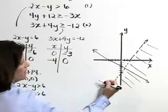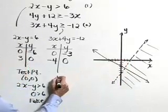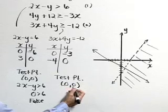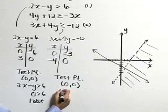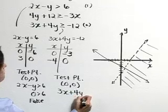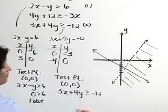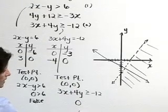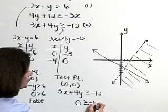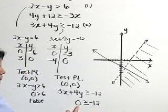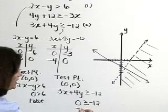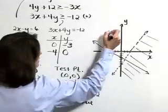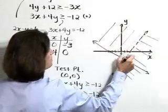Now let's determine which side of that line to shade, using the origin as a test point. Substituting 0 for x and 0 for y into our inequality 3x plus 4y is greater than or equal to negative 12, we get 0 on the left-hand side. Is 0 greater than or equal to negative 12? Yes — 0 lies to the right of negative 12 on the number line, so that statement is true. Therefore, the origin is in the solution region for the second inequality, and we'll shade above that line.